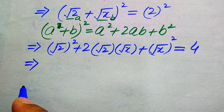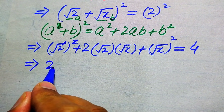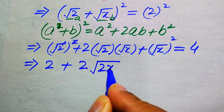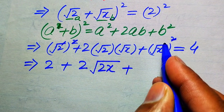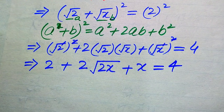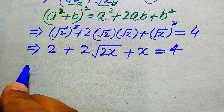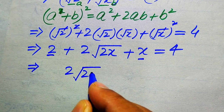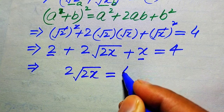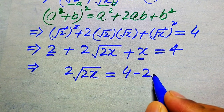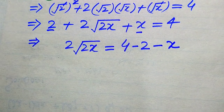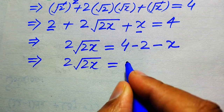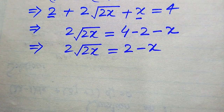In the next step, further simplifications give us: 2 and the square root cancel, giving 2; plus 2 times square root of 2x; plus x (since the square root of square root of x squared simplifies to x); equals 4. To eliminate this square root sign, we move the other terms to the right-hand side, giving: 2 times square root of 2x equals 4 minus 2 minus x, which becomes 2 minus x.